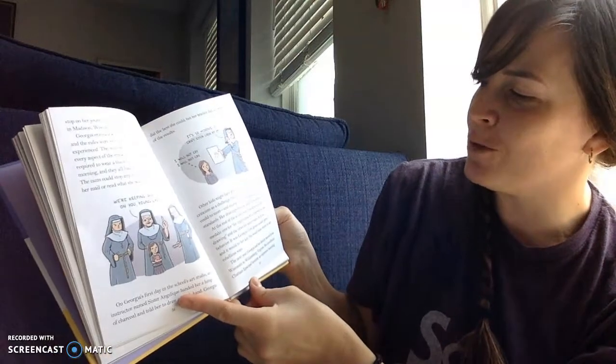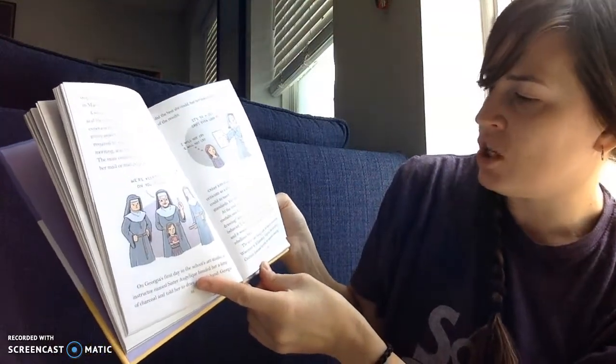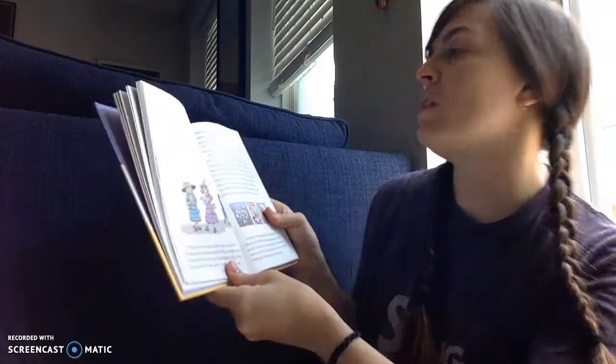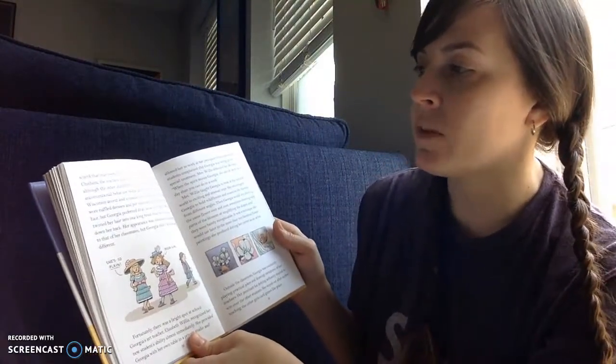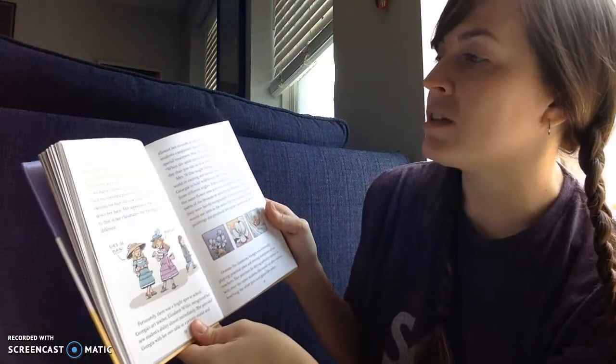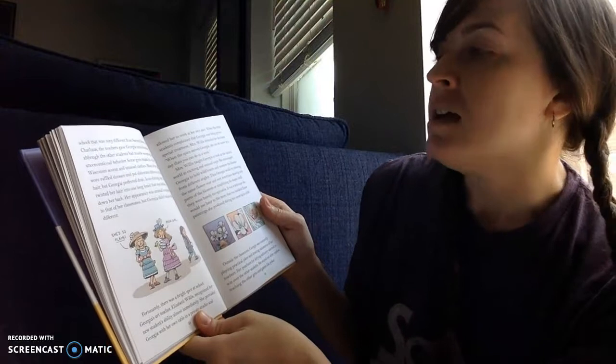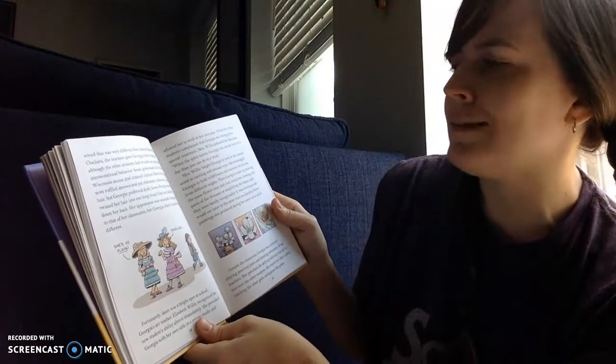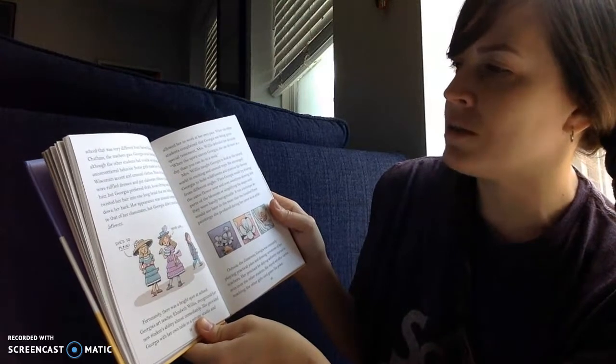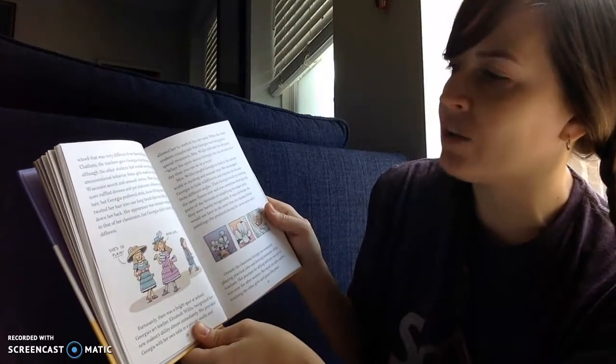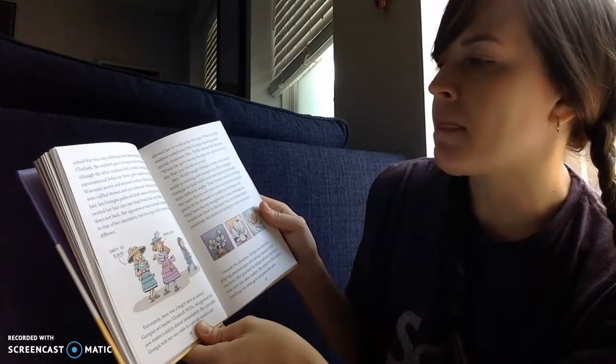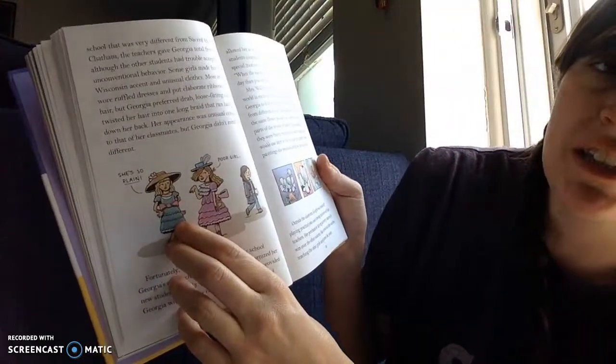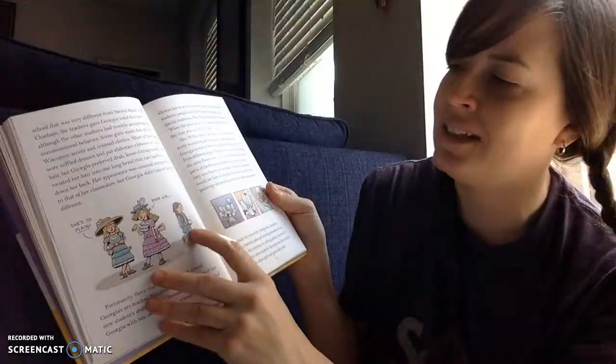The next year, Georgia and her family moved from Wisconsin to Williamsburg, Virginia. She enrolled at Chatham Episcopal Institute, an expensive boarding school that was very different from Sacred Heart. At Chatham, the teachers gave Georgia total freedom, although the other students had trouble accepting her unconventional behavior. Some girls made fun of her Wisconsin accent and unusual clothes. Most of the girls wore ruffled dresses and put elaborate ribbons in their hair, but Georgia preferred drab, loose-fitting coats. She twisted her hair into one long braid that ran halfway down her back. Her appearance was unusual compared to that of her classmates, but Georgia didn't mind being different.